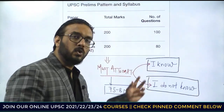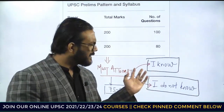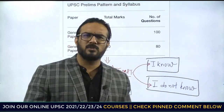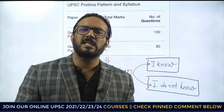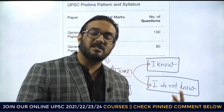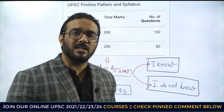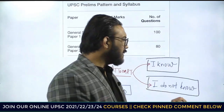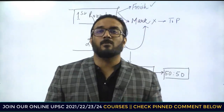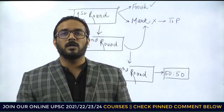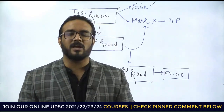ان دونوں کو جوڑتے ہیں تو اپنا 80 کا part نکلتا ہے۔ 40 questions مجھے آتے ہیں، 40-45 نہیں آتے — یا 50-60 question مجھے آتے اور 20-25 مجھے نہیں آتے — ایسی situation بن جاتی ہے۔ اگر آپ اس category میں ہو کہ بہت کم questions آتے ہیں اور باقی نہیں آتے تو پھر better ہے کہ سوچیں۔